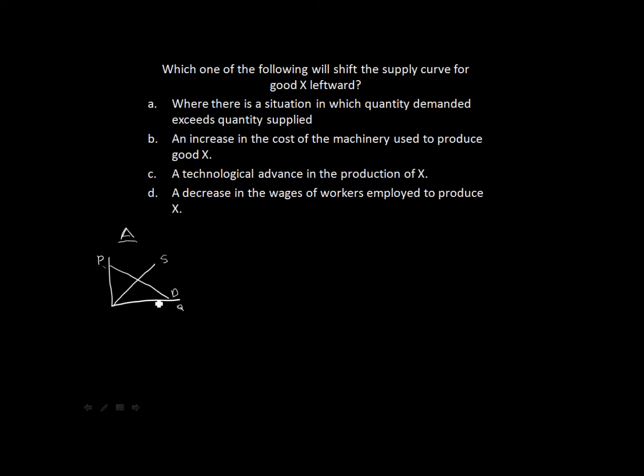So for option A, a situation in which the quantity demanded exceeds the quantity supplied. So let's find that point. Let's choose a point of quantity demanded here at let's say 20. And we'll pick another point on supply curve at 10. So in this situation, let's say the price is here too. We can see the quantity demanded exceeds that of quantity supplied, such as what they say in option A.